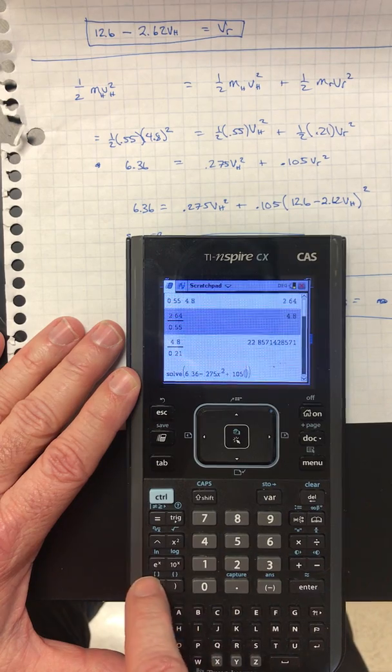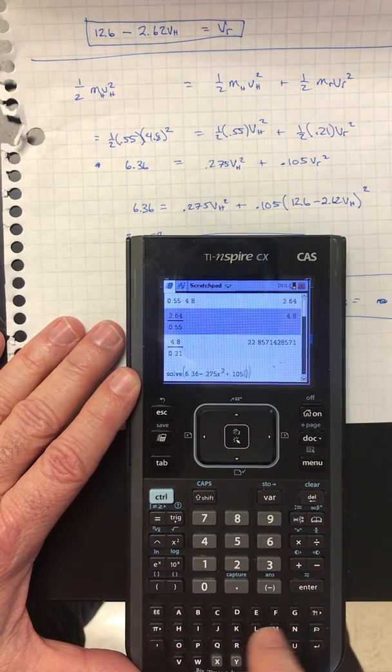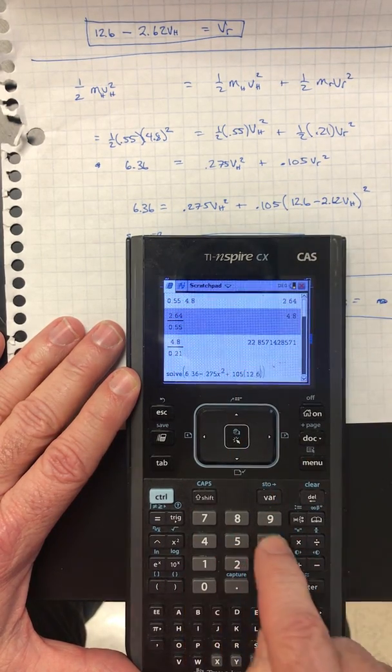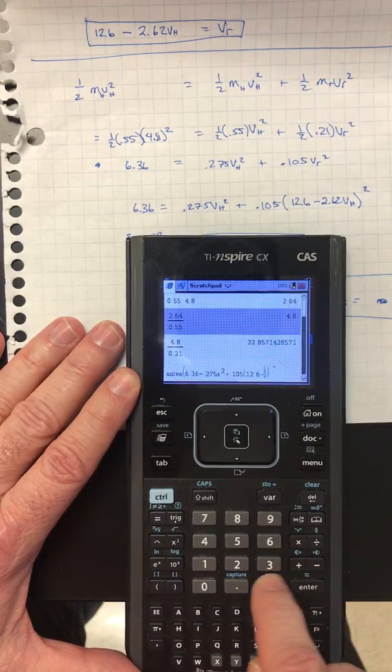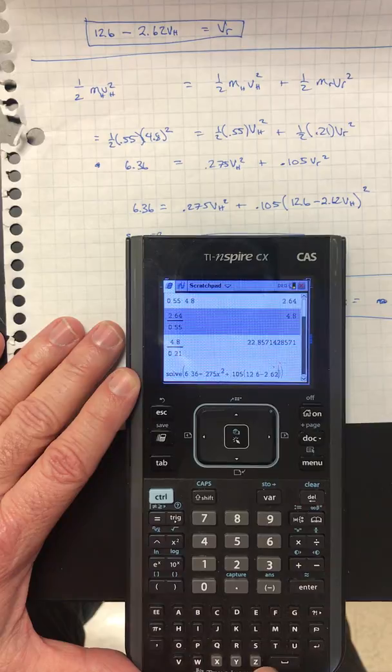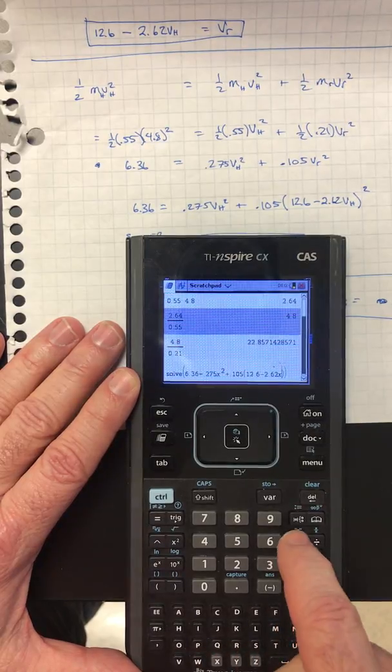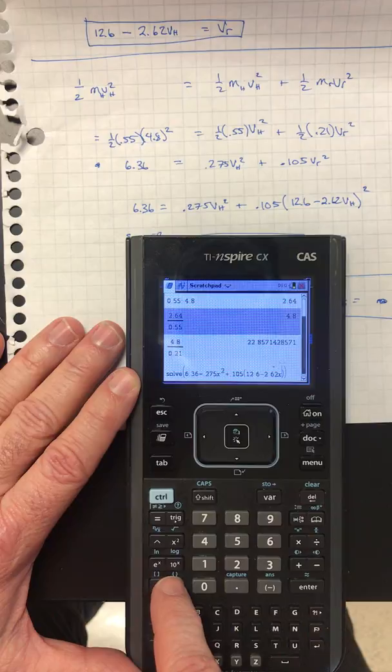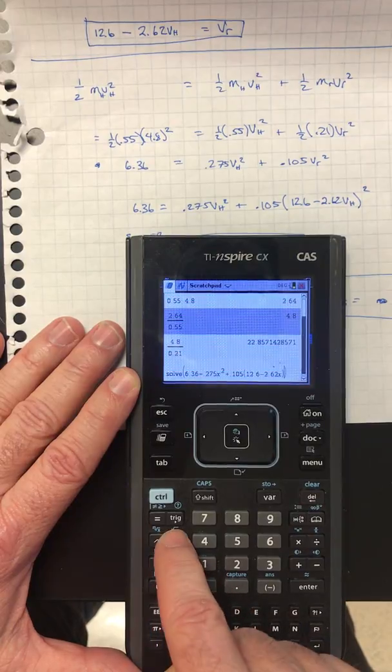Now I'm going to do the parentheses. You can see my equation right here. Times 12.6 minus 2.62X, and that's quantity squared. So that's important - quantity squared.